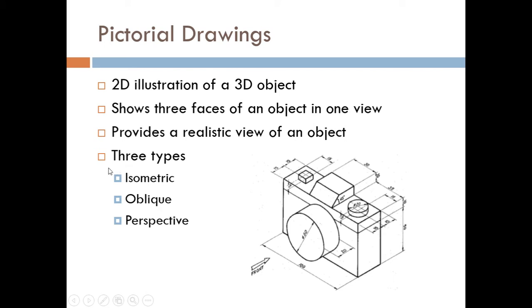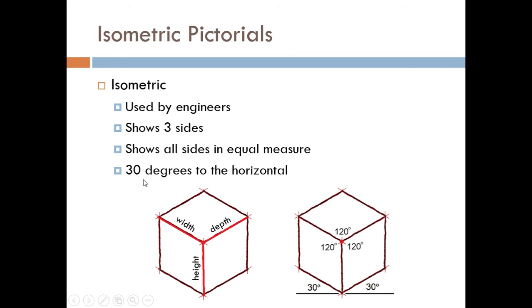There's three types: isometric, oblique, and perspective pictorial drawings. We're just going to talk about isometric, because that's what engineers use.